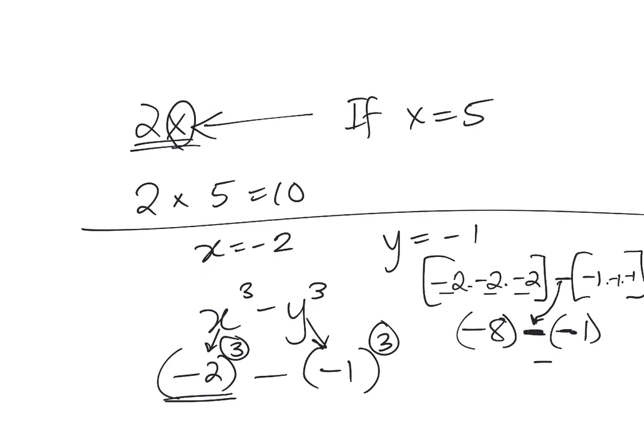When you have a minus and a minus, that becomes a plus. So that's negative 8 plus 1, and that's equal to negative 7. So we've basically simplified the problem using the values that we're given. We substituted those values in, and then we simplified the problem.